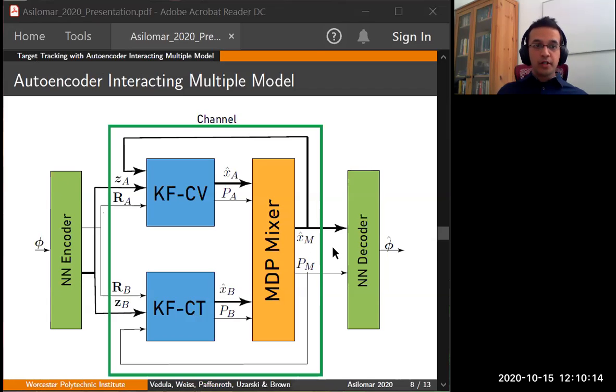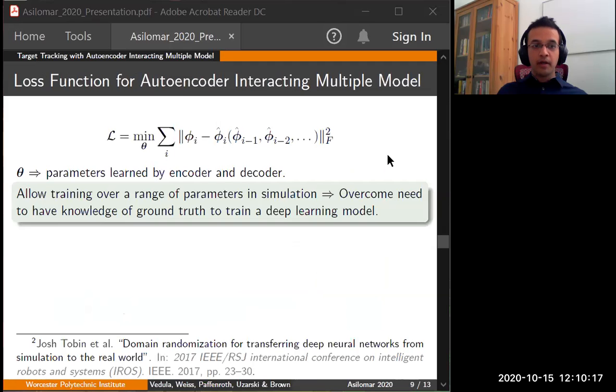What kind of loss function do we want to use in this model? In maneuvering target tracking, since the primary objective is to use noisy measurements of moving object, for example acquired by radar, to estimate or predict state trajectories, we use phi as a true value of the ground truth and phi hat as estimated value at each iteration. It has to be noted the current estimates, the current phi hat depends on all of its past estimates, phi hat i-1, phi hat i-2, and so on. So the loss function is a Frobenius norm between the ground truth and the estimated state.